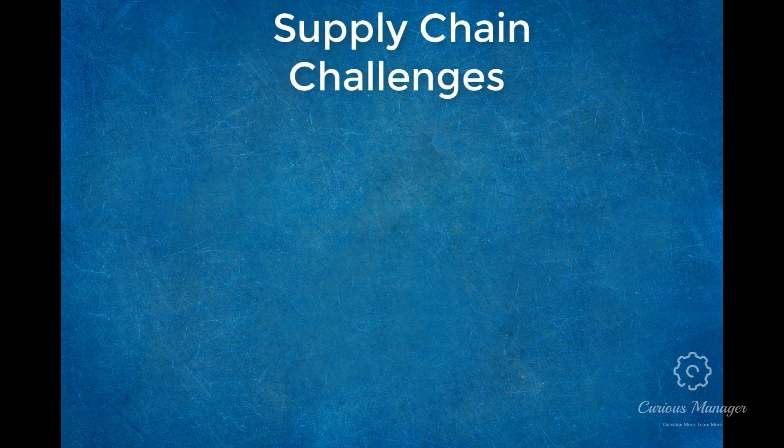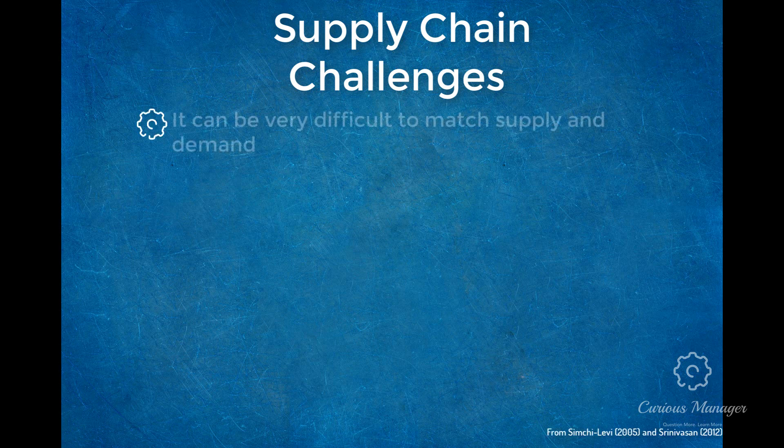There are several challenges that a supply chain faces when trying to optimize. Number one: it can be very difficult, if not impossible, to match supply and demand. The goal of a supply chain is to optimize its operations by matching what is made with what is sold. This is made difficult because demand can vary widely, which influences the accuracy of demand forecasts, and lead times to fulfill an order can fluctuate widely as well, especially when considering extraordinary events such as weather that can disrupt manufacturing and shipping.